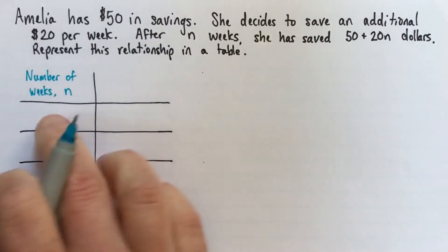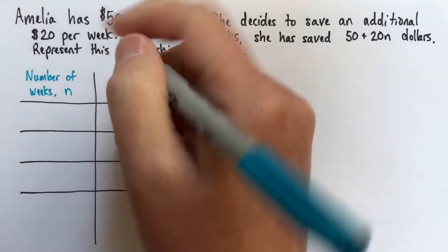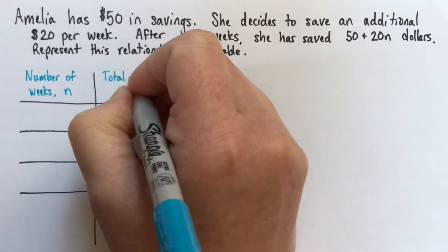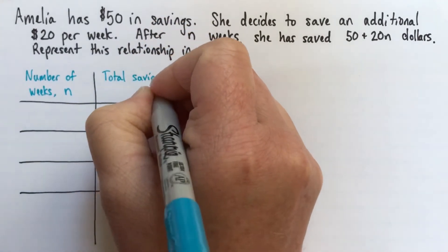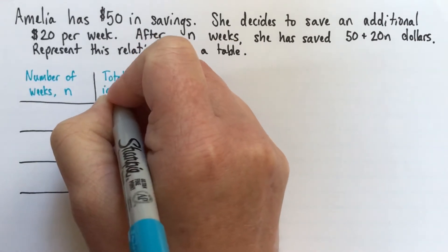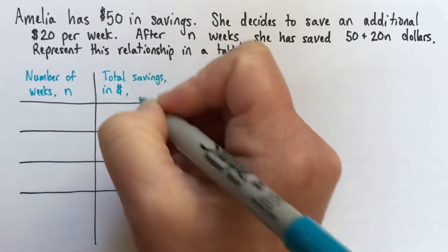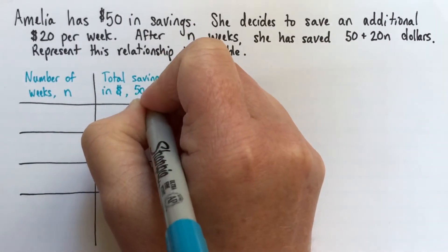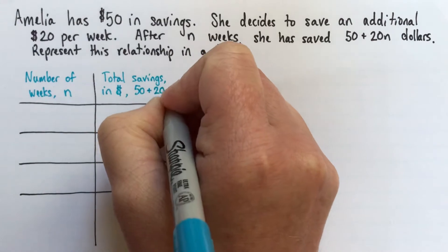And then what we wanted to compare that to is how much she has saved. So let's call that her total savings. And then just to be extra good here, I'm going to write that it's in dollars. And we'll write the expression, so 50 plus 20 times n.